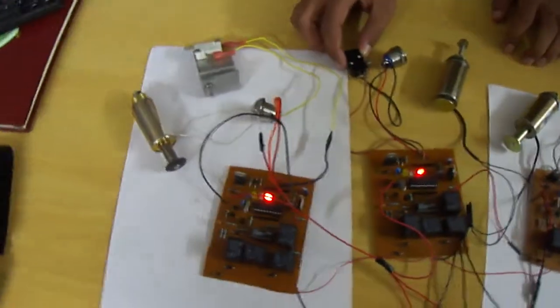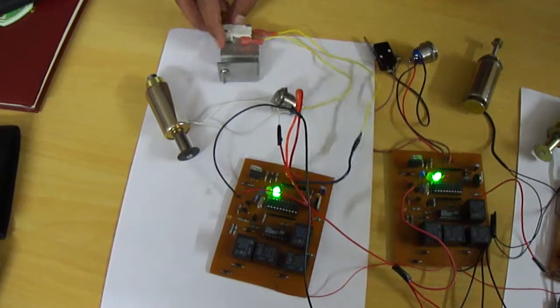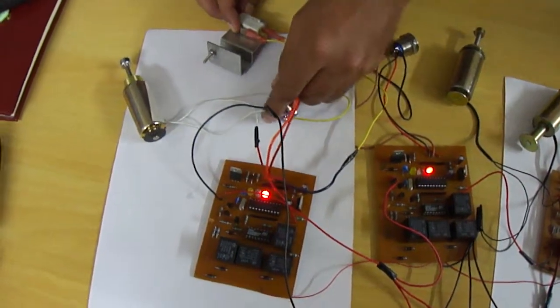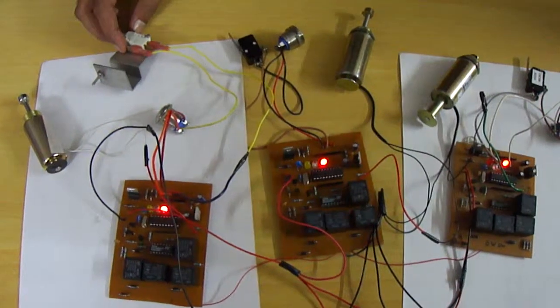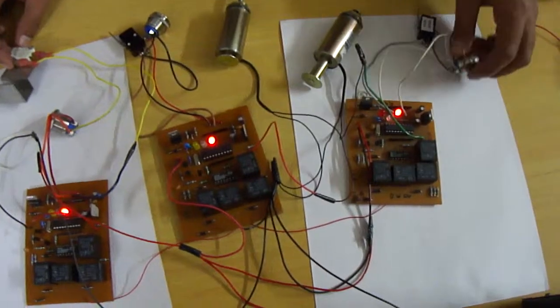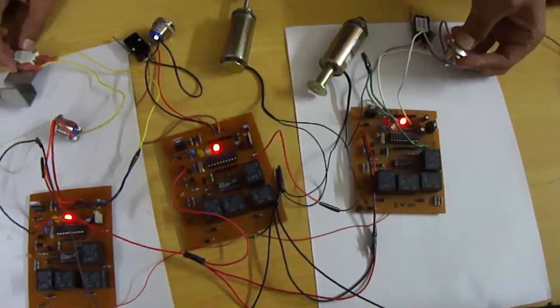Now we will try floor number three. Press the floor number three button. Solenoid operates. Now try to press floor number two button. It is not opening. And floor number one, it is also not opening.